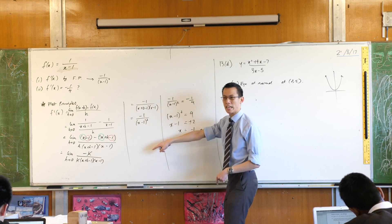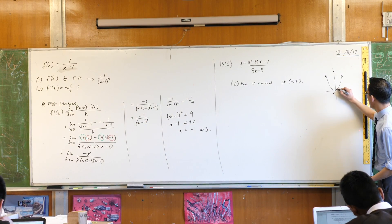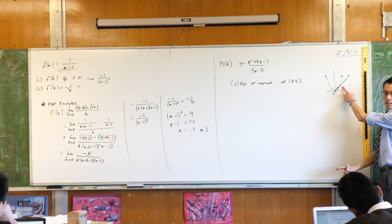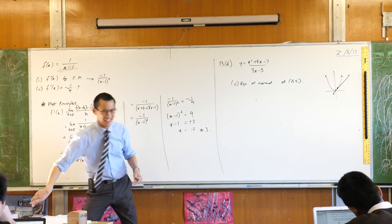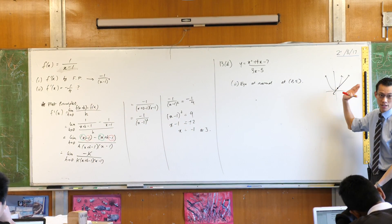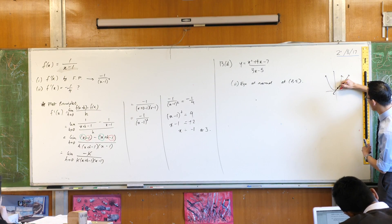What that gradient function gives you is the gradient of the tangent at any point. So for example, here is the tangent at this particular point. The normal is very closely related to that, still goes through a given point, but it's not at the same gradient as the curve, it's at right angles to the curve. So something like this.